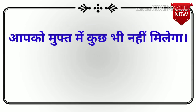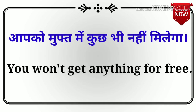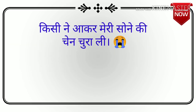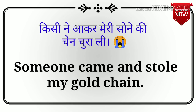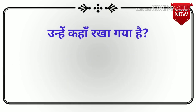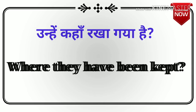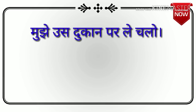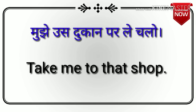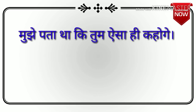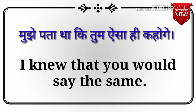Next sentence: आपको free में कुछ भी नहीं मिलेगा. — You won't get anything for free. Next sentence: किसी ने आकर मेरी सोने की चेन चुरा ली. — Someone came and stole my gold chain. Next sentence: उन्हें कहाँ रखा गया है? — Where have they been kept? Next sentence: मुझे उस दुकान पर ले चलो. — Take me to that shop. मुझे पता था कि तुम ऐसा ही कहोगे. — I knew that you would say the same.